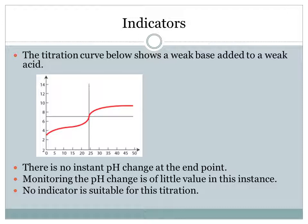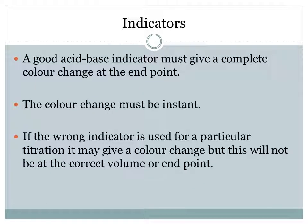The last titration type is for a weak base and a weak acid. In this case there is no sharp end point and no instant pH change. Monitoring the pH of a weak acid–weak base titration is of little value, and there is no suitable indicator for this type of titration. Bear that in mind: with a weak base and a weak acid, there is no instant pH change, therefore no indicator is suitable.